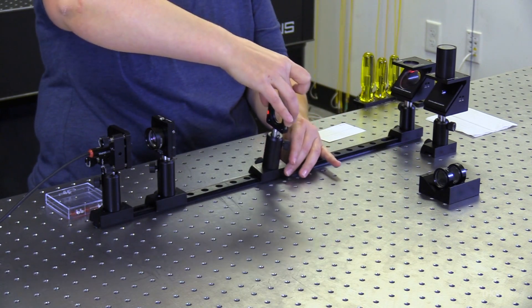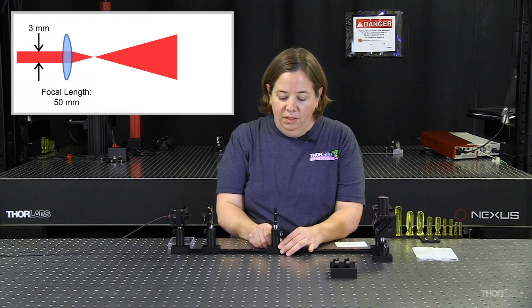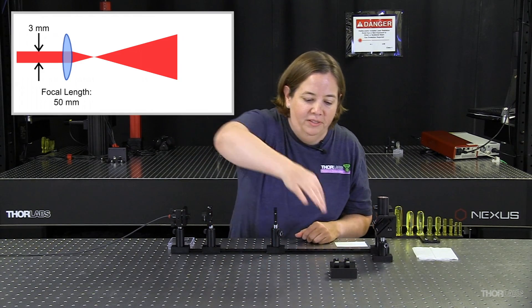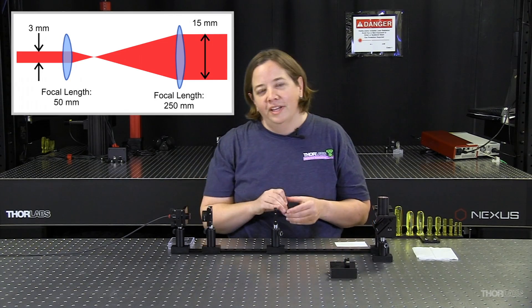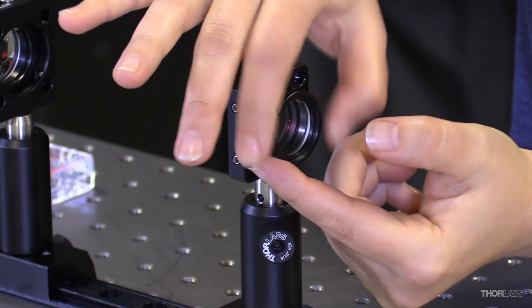I'm going to start with the lens mount here and attach that to the rail. I'm going to pick out one of my other lenses. I'm going to pick the longer lens, a relatively long focal length lens, so we'll get a relatively large beam.